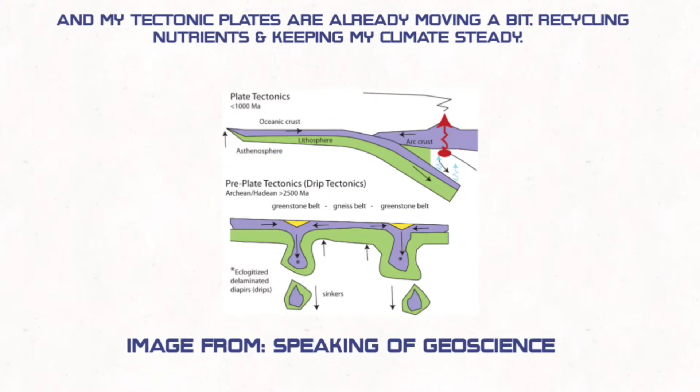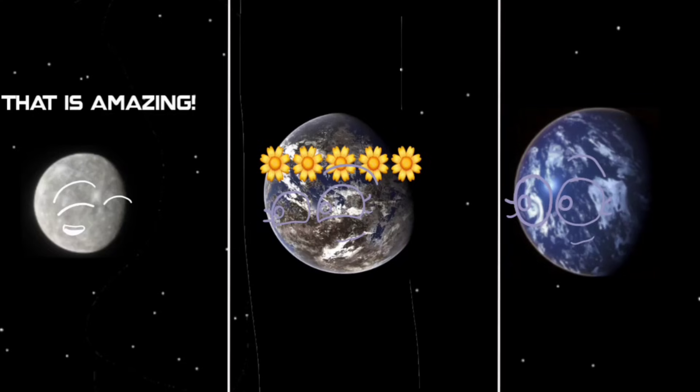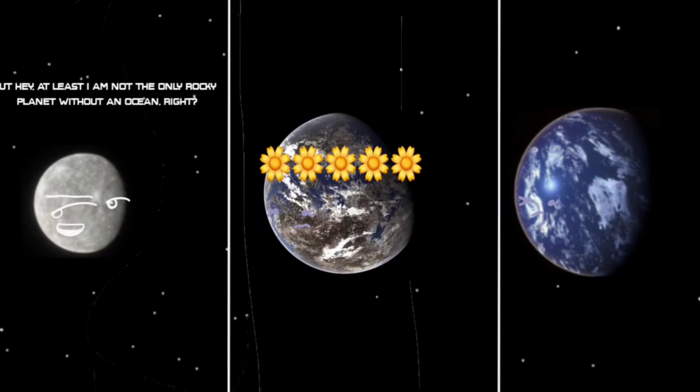I see. Comets brought even more water, and my tectonic plates are already moving a bit, recycling nutrients and keeping my climate steady. That is amazing. I wish I could have an ocean too, but hey, at least I am not the only rocky planet without an ocean, right?